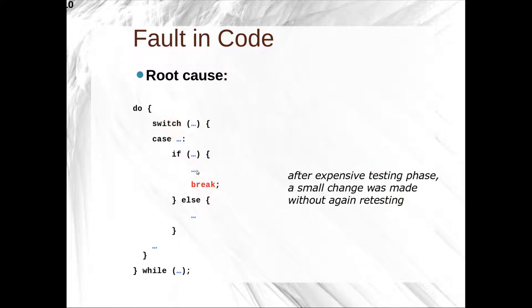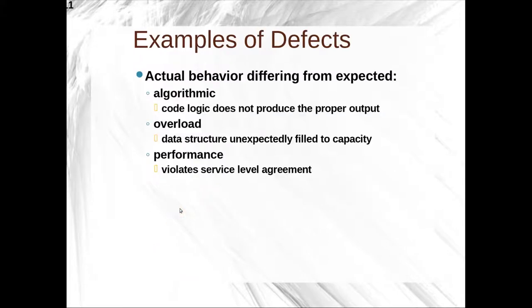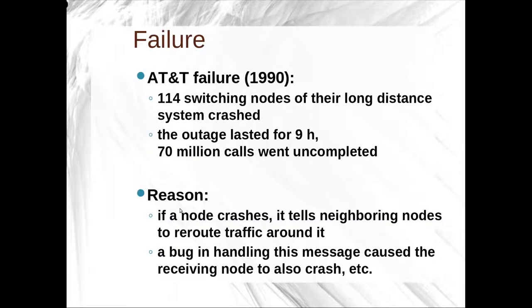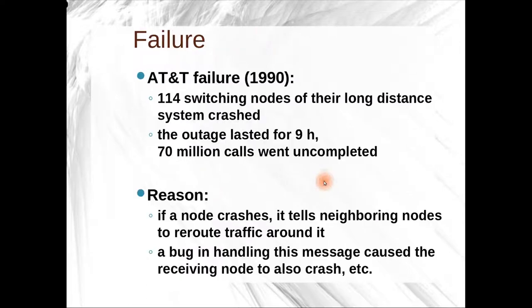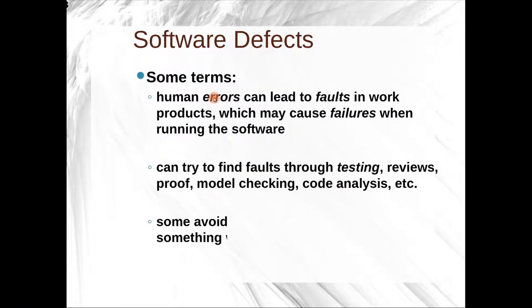The root cause was this kind of code: a do-while loop with a switch statement, and inside a case in the switch statement, a break was run. This break meant the code was left in an inconsistent state — code after that point would not run, and it caused a crash. This small change of adding a break was made without retesting. They didn't think they had to retest, didn't want to spend money on retesting, committed it, and when it got hit, it caused a crash and an inconsistent state, which killed a bunch of nodes.